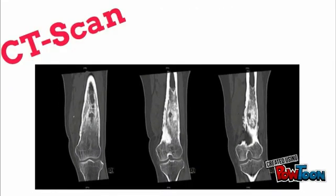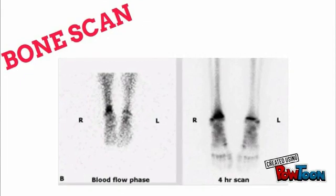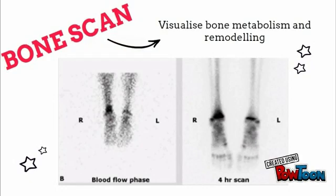CT scans can show various pathologies associated with osteomyelitis, such as cortical destruction, periosteal reaction, periosteal purulence, sequestrum, and lytic lesions with or without surrounding sclerosis in a metaphyseal area. Bone scans are usually best for early detection of bone infection, as they can confirm the diagnosis within 24-48 hours and localise the focus of infection by visualising bone metabolism and bone remodelling. Here, one can see the increased uptake in the right distal tibia indicating metaphyseal osteomyelitis.